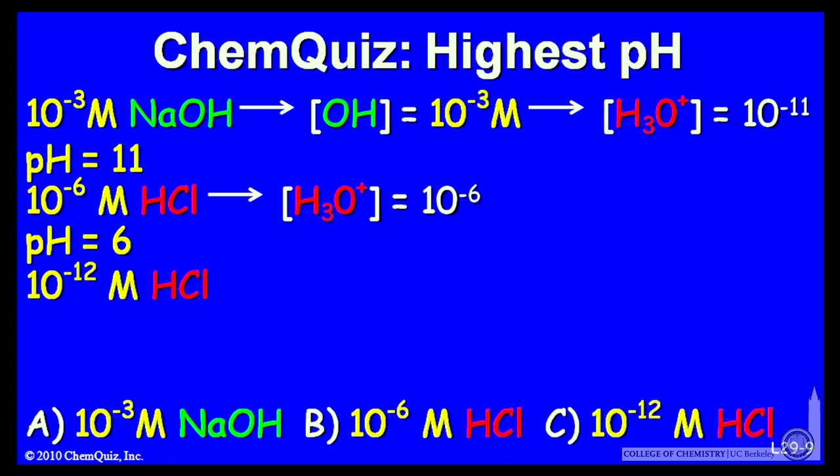10 to the minus 12 molar HCl, very dilute HCl. Again, that'll totally dissociate. And I'll have an H3O plus concentration of 10 to the minus 12 from the HCl that I add.